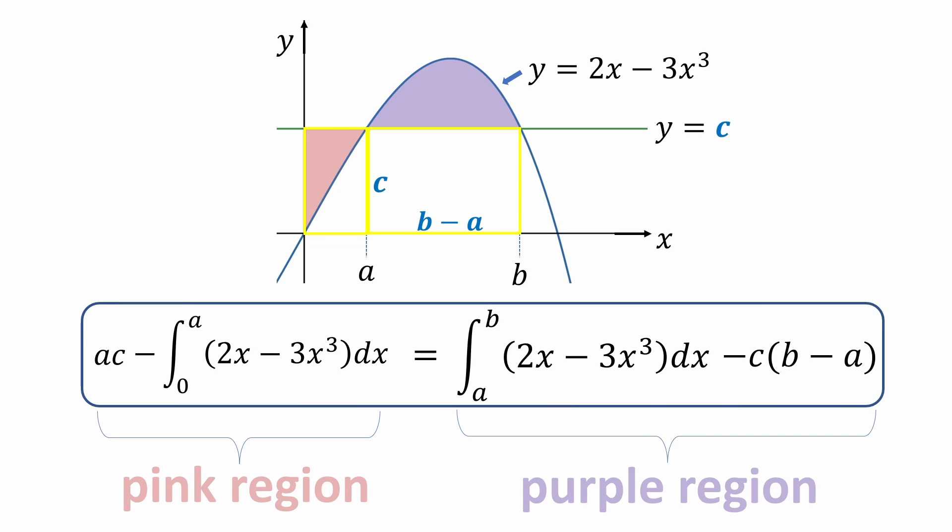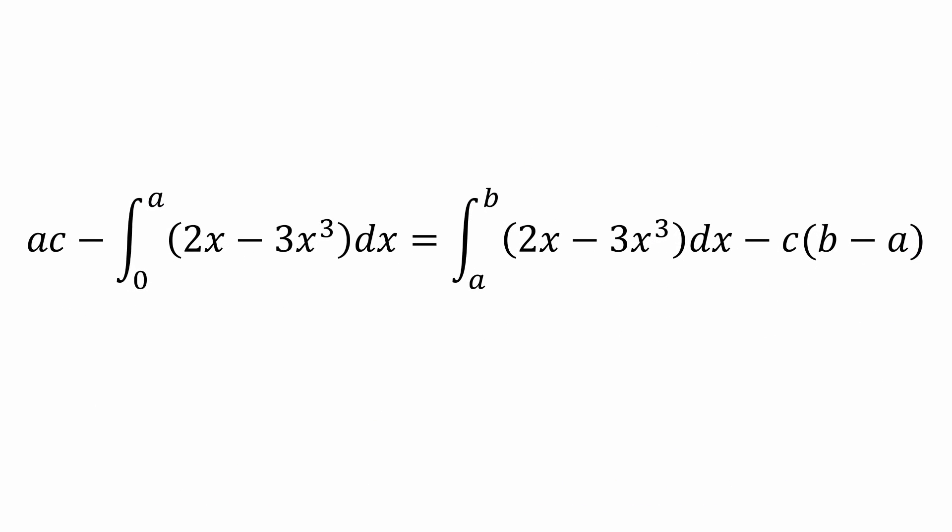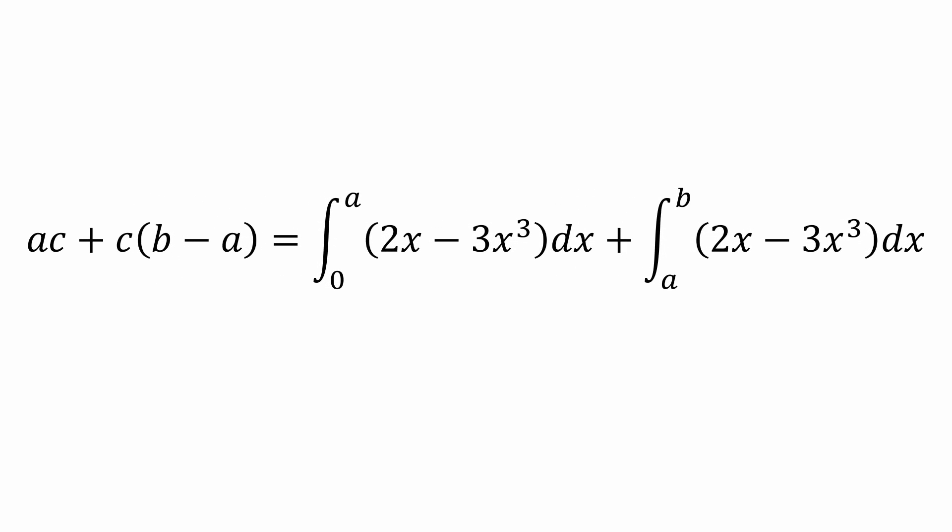Now let's attack this equation. First thing we'll do is collect the integrals on the right hand side and the rectangular areas on the left. The rectangular areas on the left simplify to b times c. And the two integrals on the right can be written as a single integral with limits going from 0 to b.